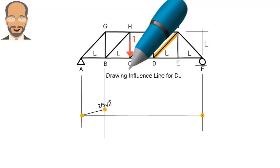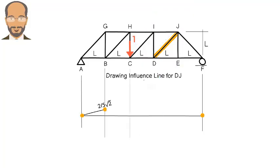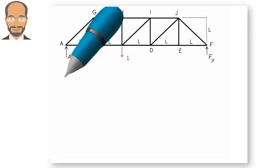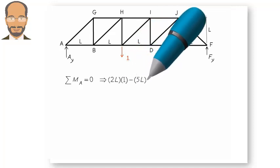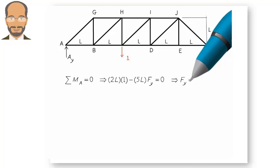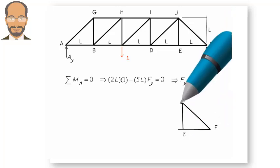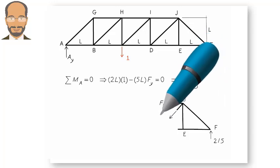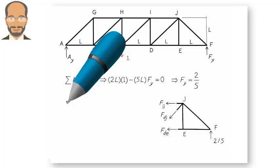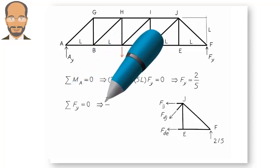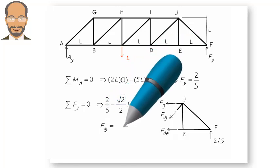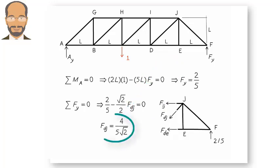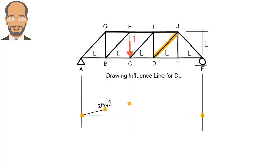Then, we place the unit load at C and calculate FDJ in a similar manner. We plot the point and connect it to the previous point on the graph using a straight line.